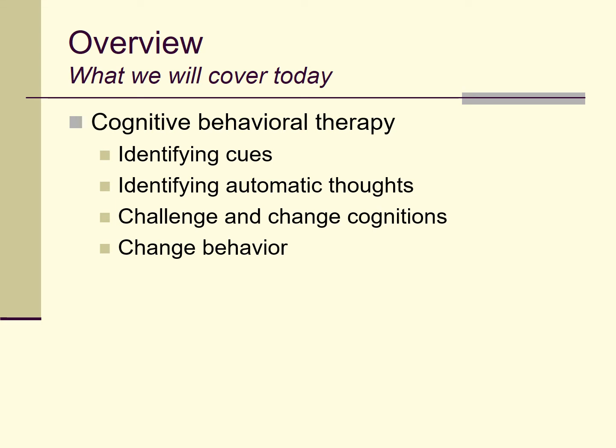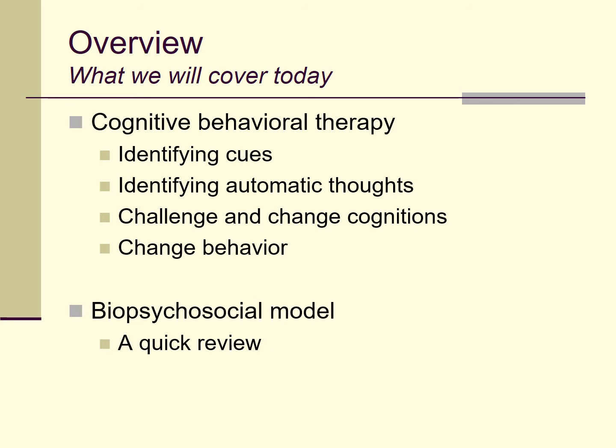So I'm going to talk a little bit about cognitive behavioral therapy, identifying some core features of it, hopefully making it seem relatively straightforward. I'm going to do a quick review of the biopsychosocial model, which I've talked about before. And then I'll give a couple of examples of treatments for different substance use disorders, and hopefully give you a sense of how we can put together biopsychosocial interventions to treat addiction.